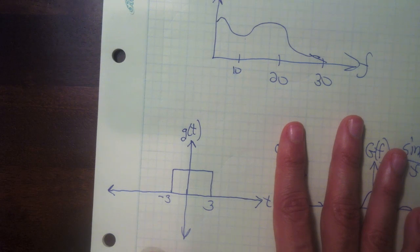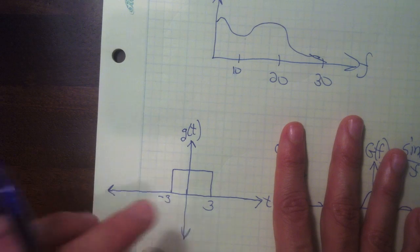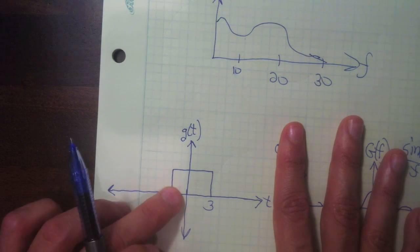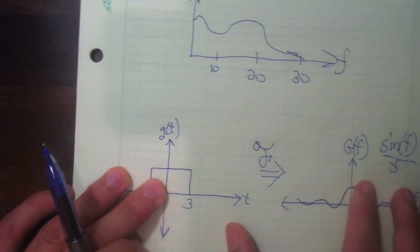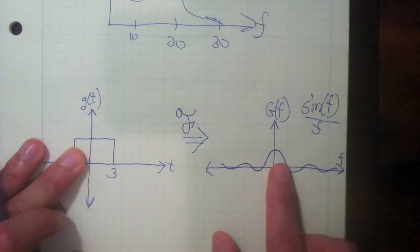So if we take the Fourier transform of this, what we're doing then remember is all we're doing is finding a different representation for the signal. So we're saying, what are the building blocks in terms of sine and cosine functions that make up this signal?